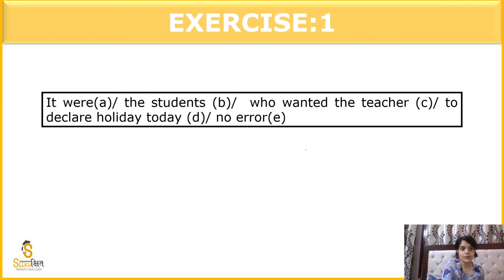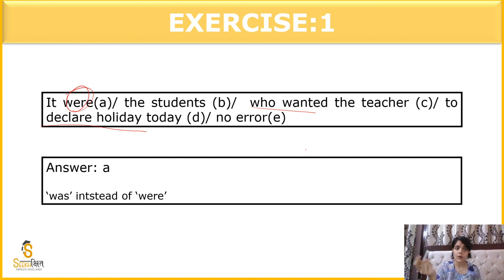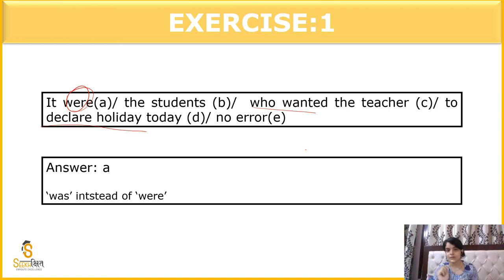Question 10: 'It were the students who wanted the teacher to declare the holiday today.' The error is in Part A — 'were' should be 'was.' The correct sentence is: 'It was the students who wanted the teacher to declare holiday today.'